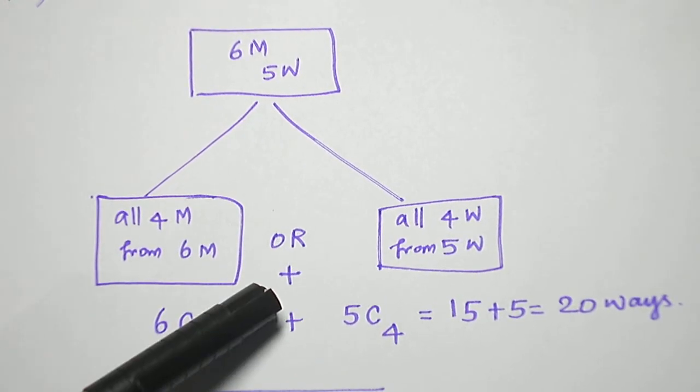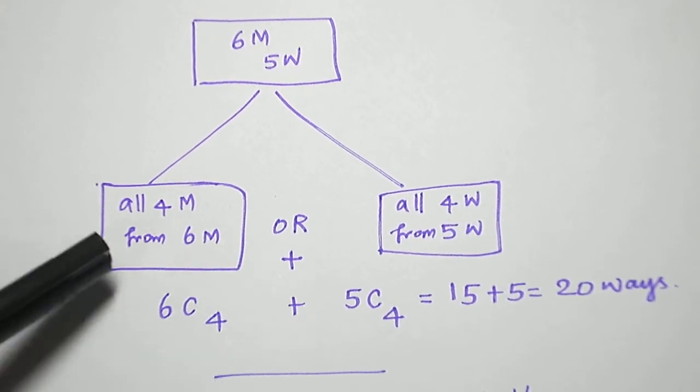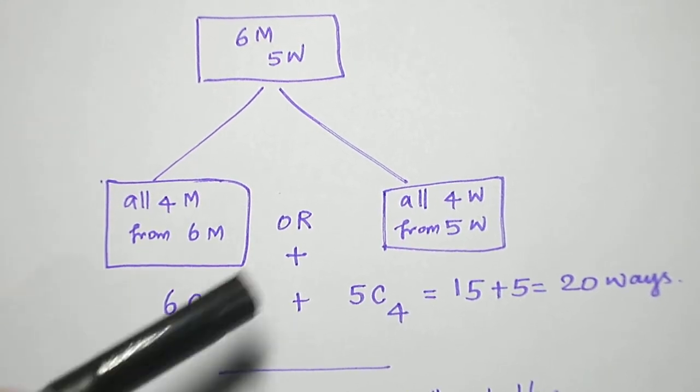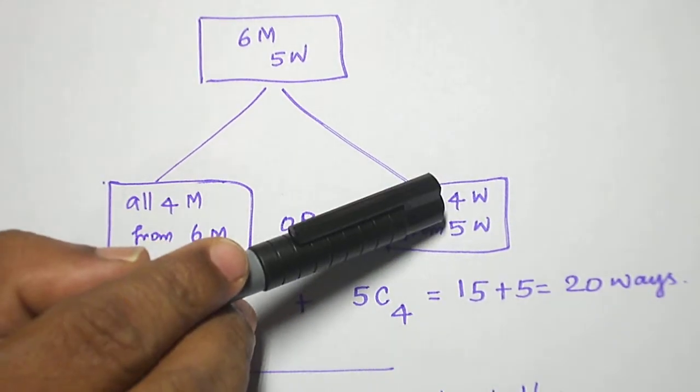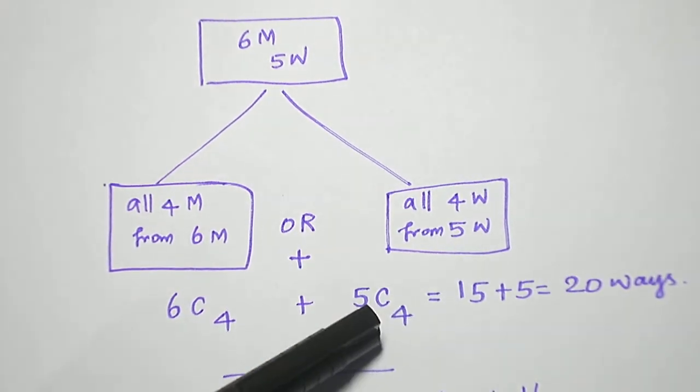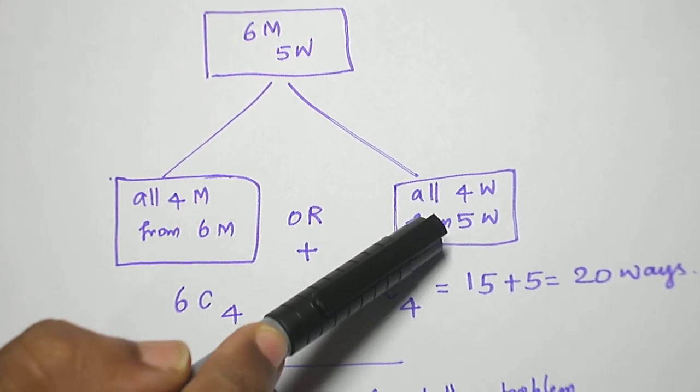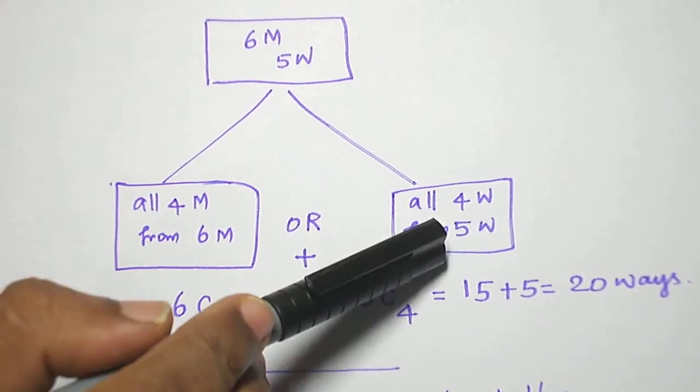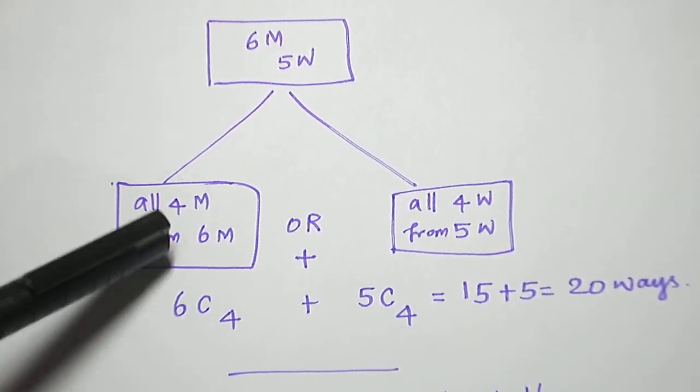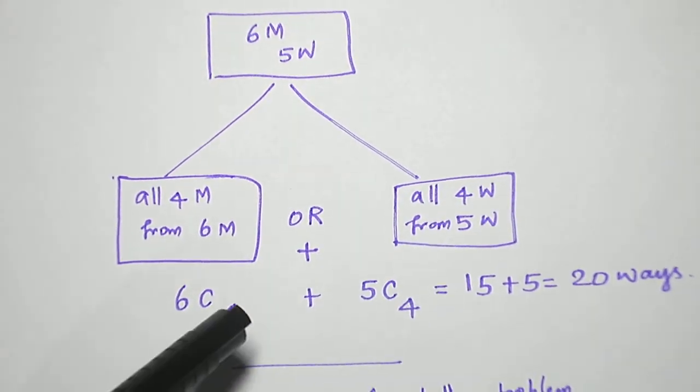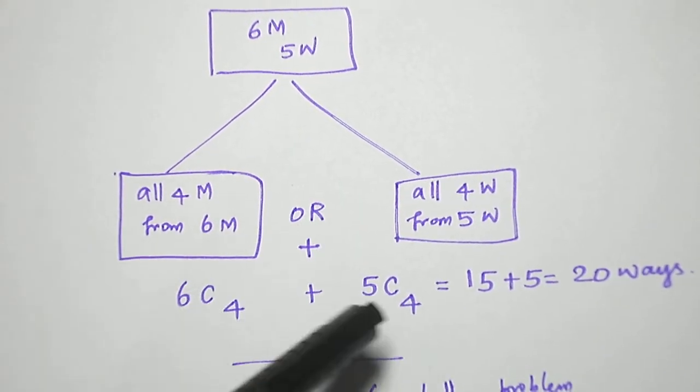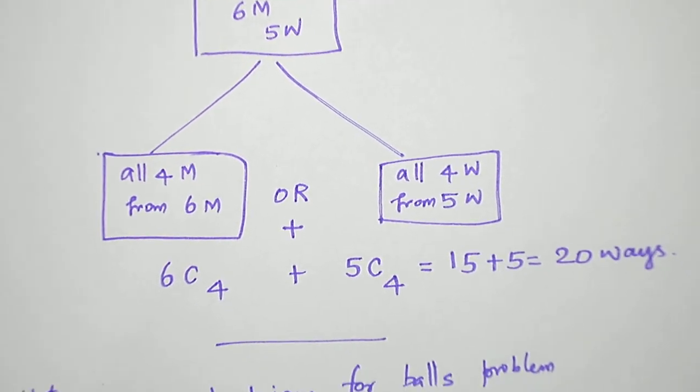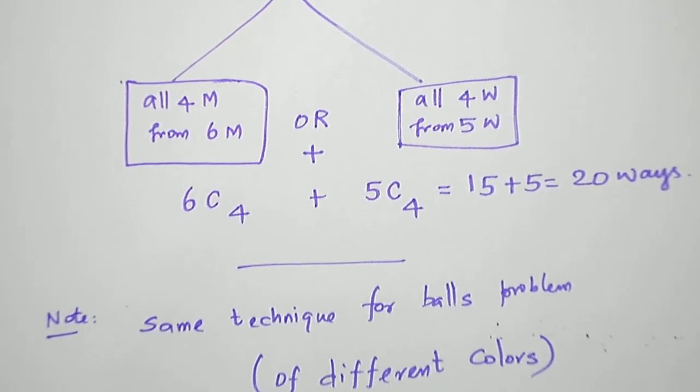Whenever we have OR, I have to put plus. So four men from six men: 6C4, plus four women from five women: 5C4. Either this or this, all are either male or all are female. So 6C4 plus 5C4 equals fifteen plus five equals twenty ways of selecting all of the same sex.